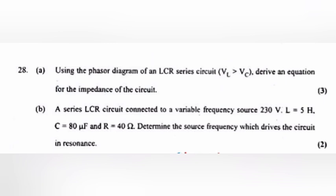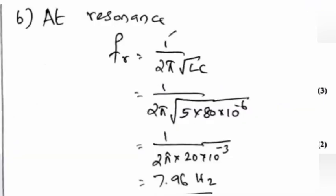Question 28b: A series LCR circuit is connected to a variable frequency source of 230 V, with L = 5 H, C = 18 μF, and R = 14 Ω. Determine the source frequency which drives the circuit in resonance. Answer: At resonance, f = 1 / (2π√LC). Solving gives the answer.